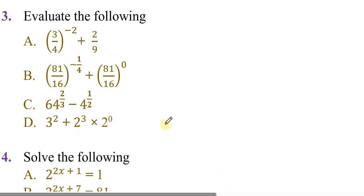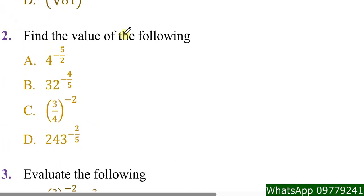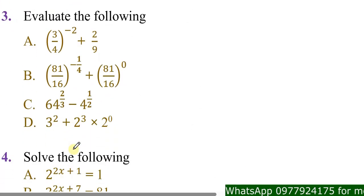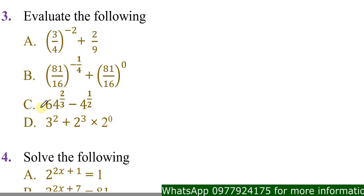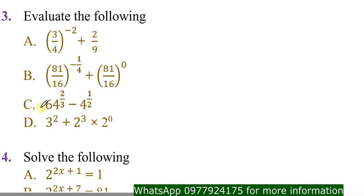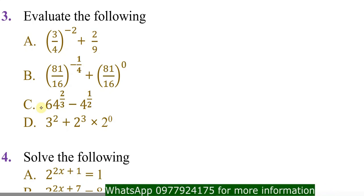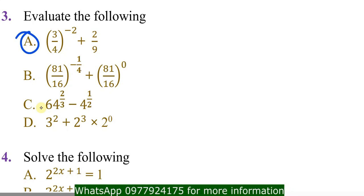Remember yesterday we looked at those questions, and I said today we'd be looking at these ones here. Mathematics is simple — if you join the DMS Online School you are going to see that. So let's start: evaluate the following. We have (a): 3 over 4 to the power negative 2, plus 2 over 9.